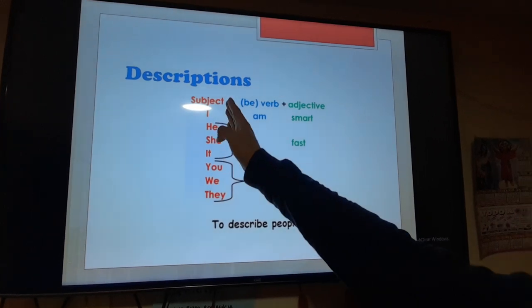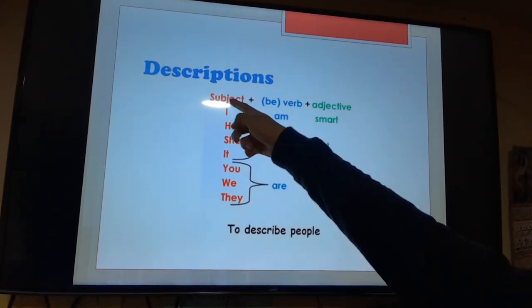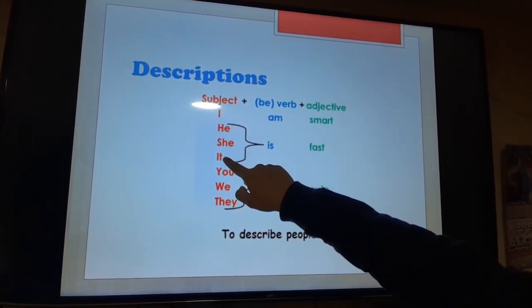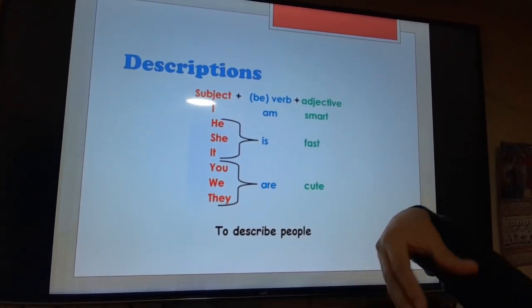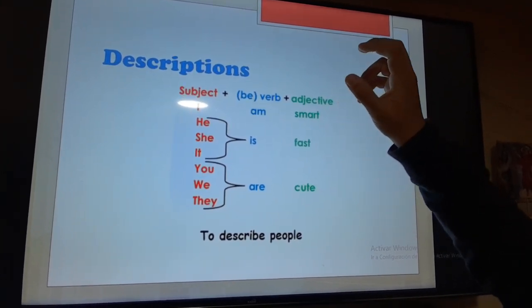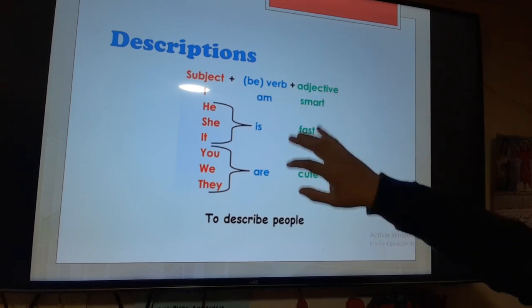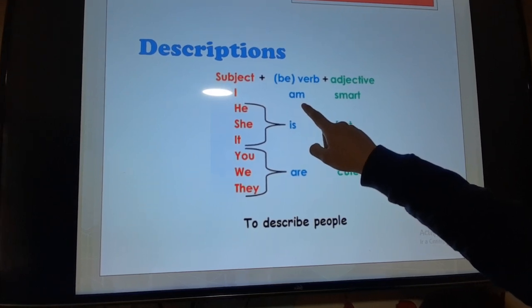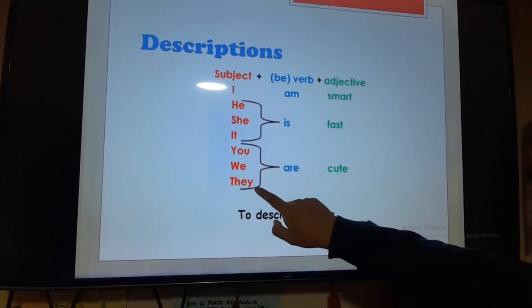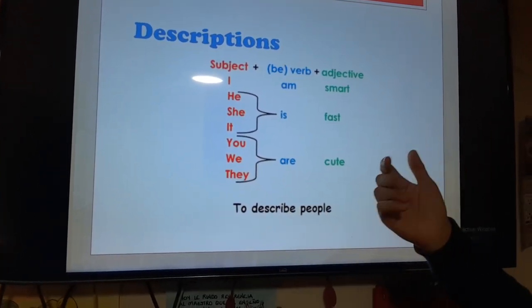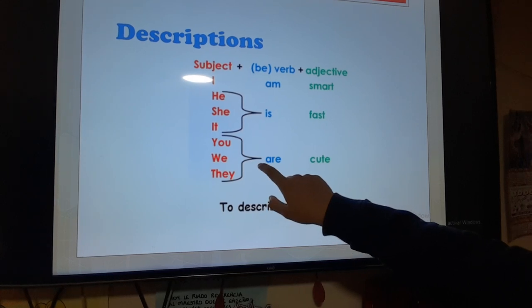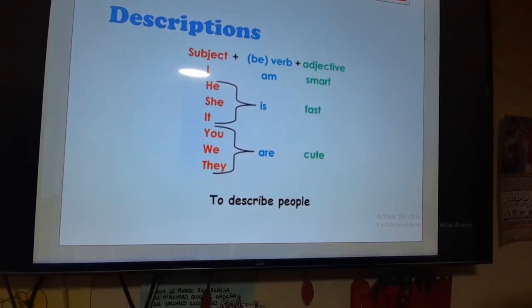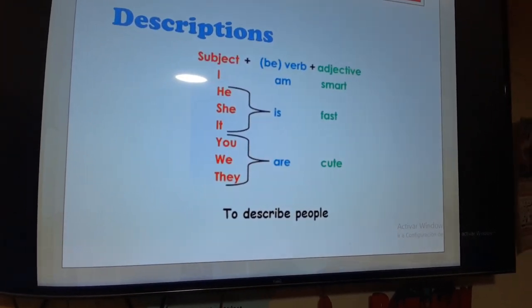So now, first we have to speak about the subject or the personal pronoun. The personal pronoun could be I, you, he, she, it, you, we, they, cualquiera de ellos. And on the second place, we have to speak about the verb to be. The verb to be is the most important because when you have to speak about I, you say am. When you speak in third person, you have to use is. And finally, when you speak with plural people, you have to say are. Finally, you have to write the adjective, the weight, the height, or the skin color that you have to use.